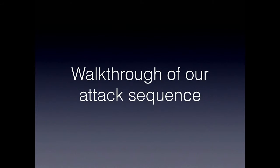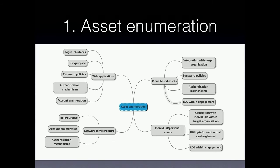When it comes to our attack sequence, we try to understand who the organisation is first and enumerate everything associated with them: web applications, how they're authenticating, what network infrastructure they have. Cloud-based assets are another interesting one that we overlook from both an attack and defence standpoint. Off the back of this we map out social interactions and individual personalities, identifying key players — whether C-level executives or people maintaining accounts — and establish as much as we can from breach data against those individuals.